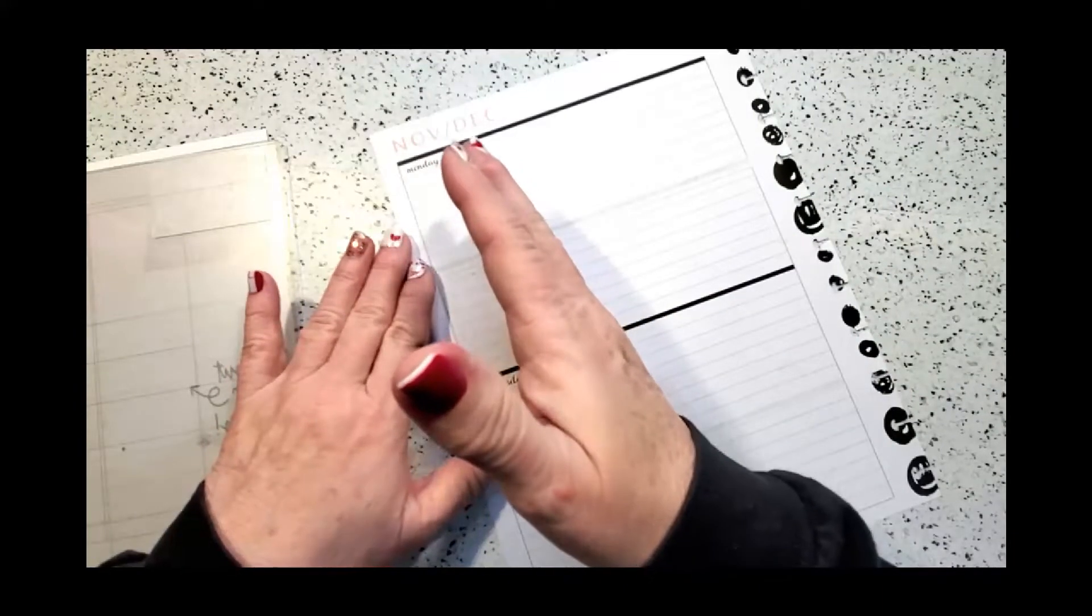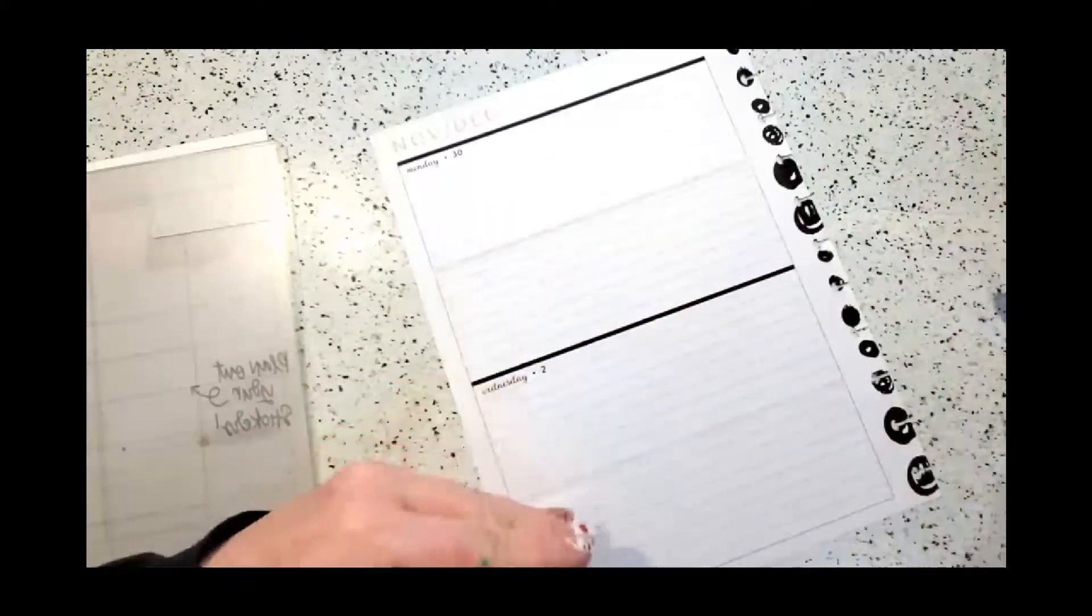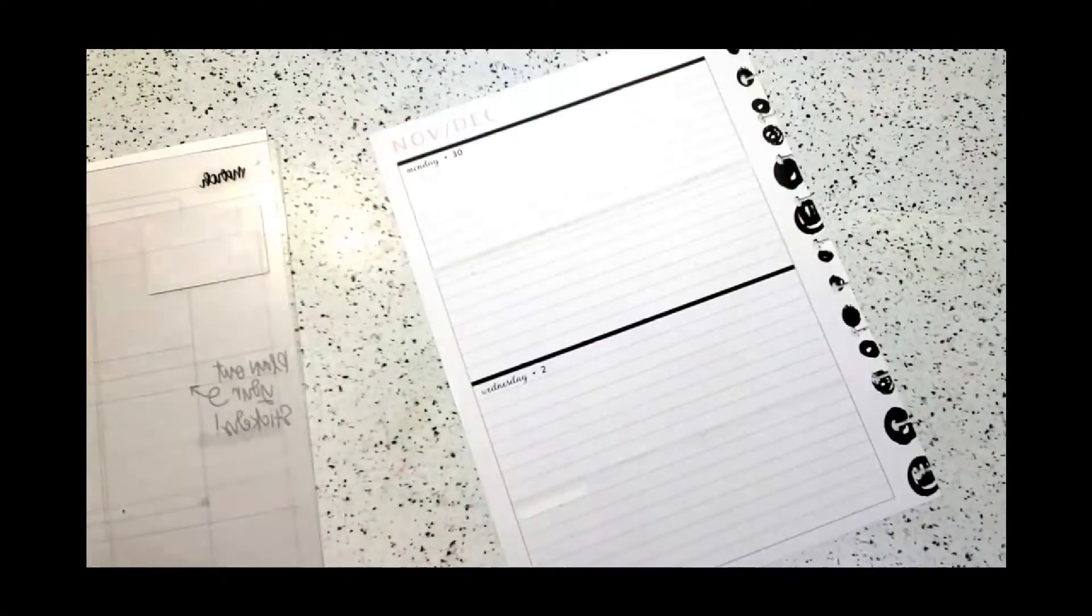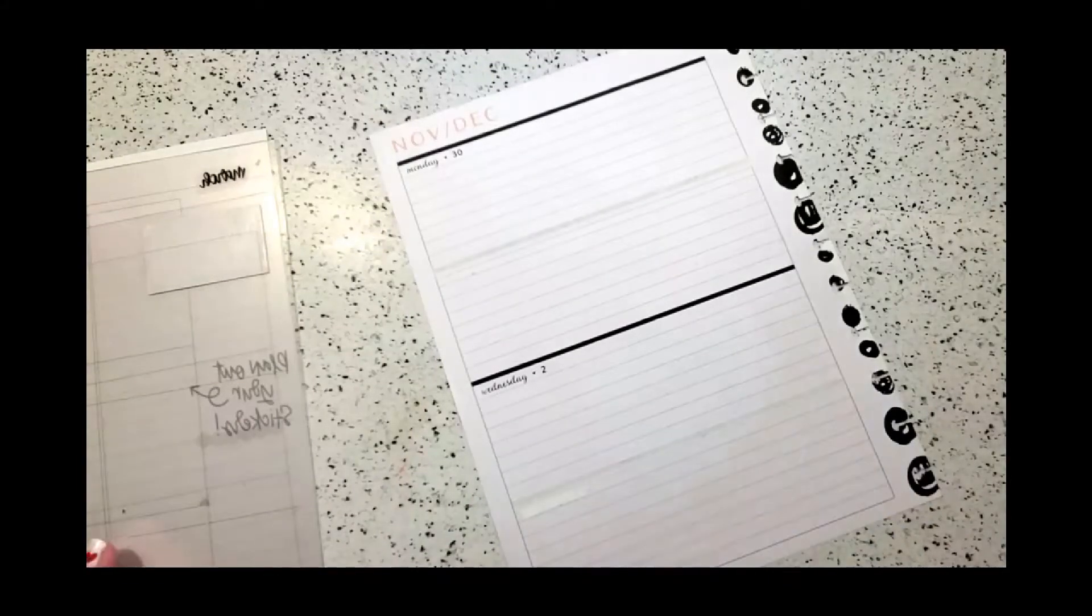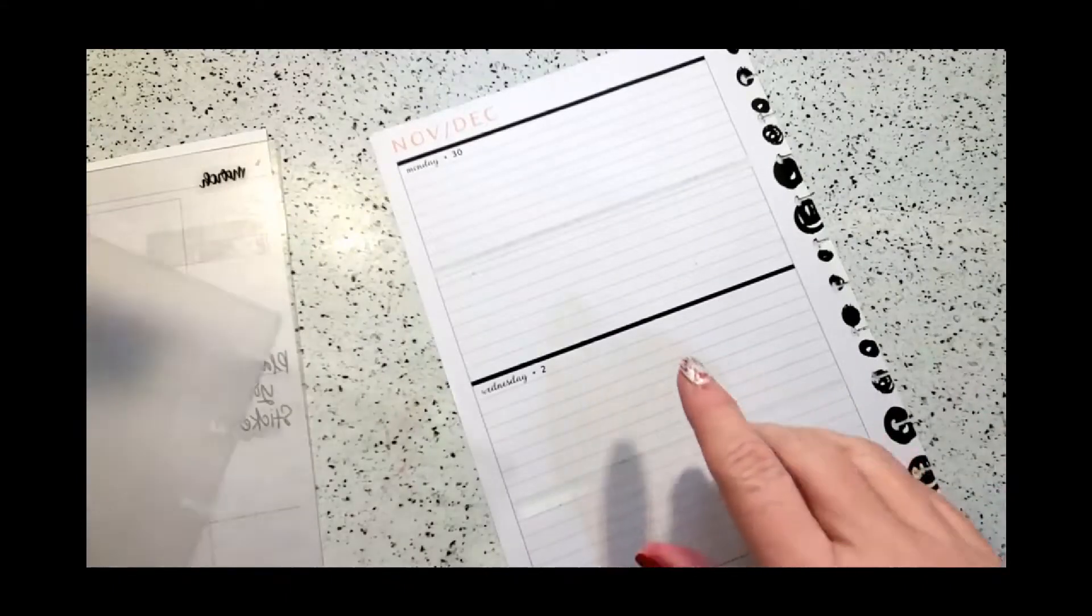If you were going to do it as a memory planner or a book journal, you would then only have to enter four times a week as well. So there really isn't a date here. You can always add a date, but we're going to go on.